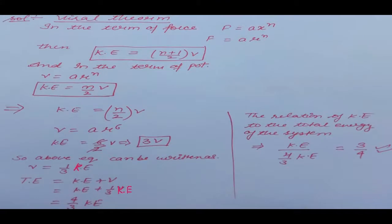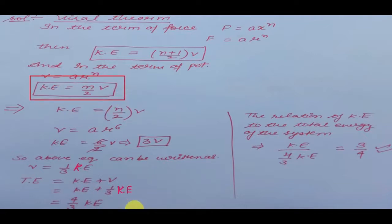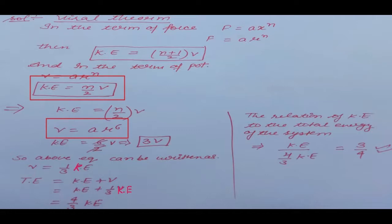This question is straightforward. Just use the virial relation for potential: kinetic energy = n/2 times potential energy. Here the potential is v = ar^6, so n = 6. Putting in this value, kinetic energy becomes 3 times potential energy, which means potential energy equals 1/3 times kinetic energy.